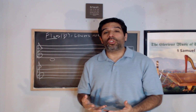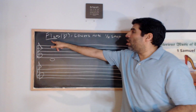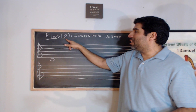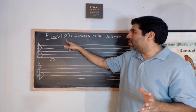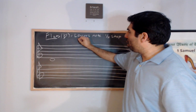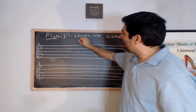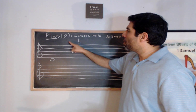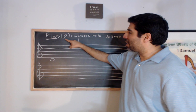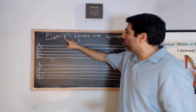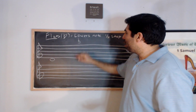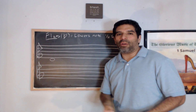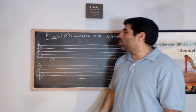Today we're going over flats. Flats look like fancy lowercase b's. The difference between a flat sign and a regular lowercase b is that the flat sign slants upward at the bottom, whereas a regular lowercase b has a regular loop. You place the flat on the left side of a note.